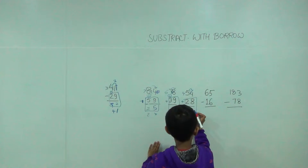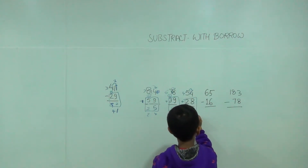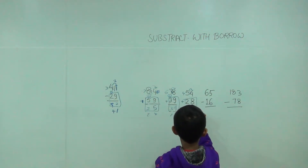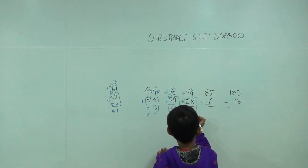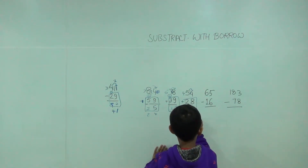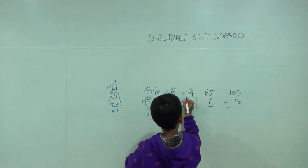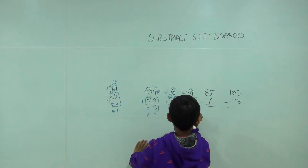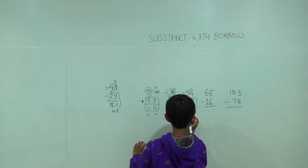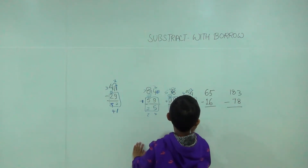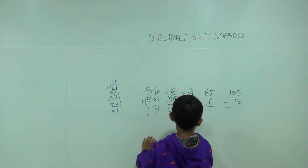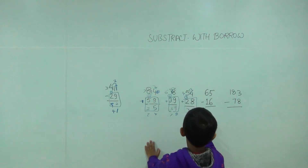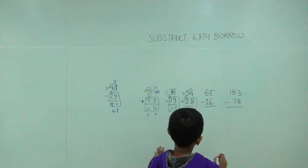8 plus 6 is equal to 14, so 4 would be here and 1 would be here. And we called it carryover. 2 plus 2 is 4, plus 1 is equal to 5. So we have done correct.